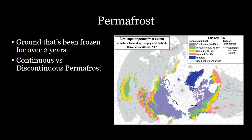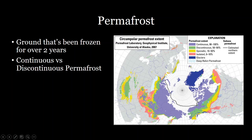Permafrost comes in two different varieties: continuous permafrost and discontinuous permafrost. Continuous just means that the entire landscape has a continuous layer of frozen soil, whereas discontinuous is generally in warmer areas where you have a patchwork of frozen soil where there are some areas that have thawed out. You can see here a map of continuous versus discontinuous permafrost, with continuous in purple taking up higher latitudes and colder regions, whereas discontinuous permafrost occurs in some lower latitude areas as well as in the Himalayas. You can also get sporadic permafrost and isolated permafrost, which are just very small patches in particular cold regions.